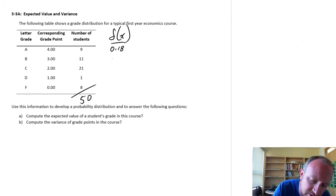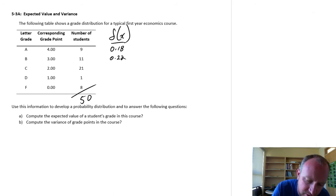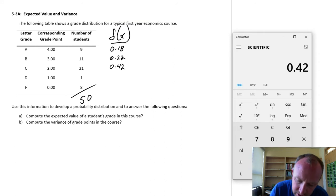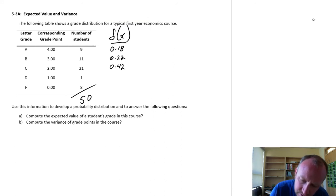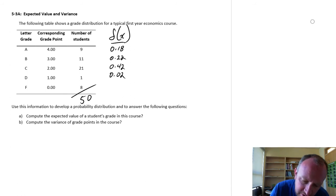So this is going to be 0.22. And next one, 21 out of 50, 0.42. Let's see, 1 out of 50, 0.02. And finally, 8 out of 50, 0.16.